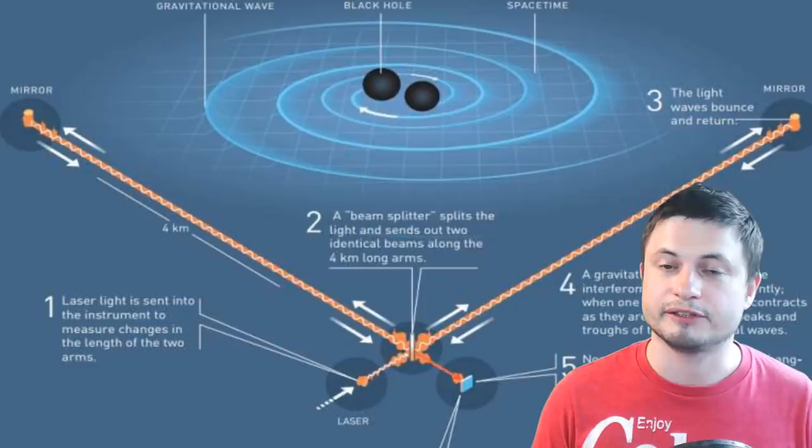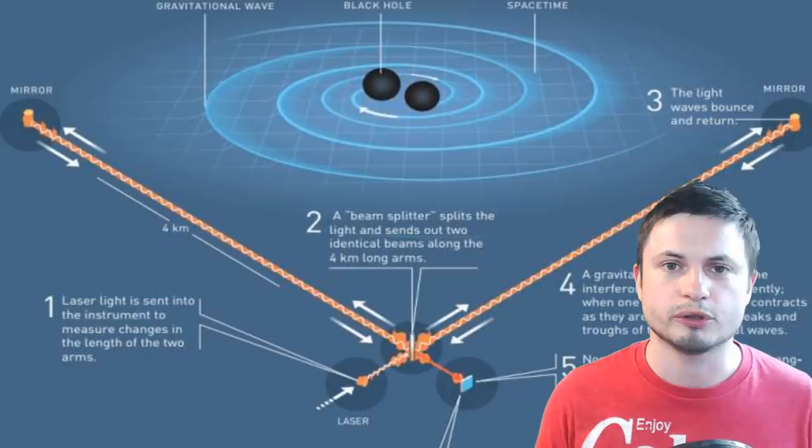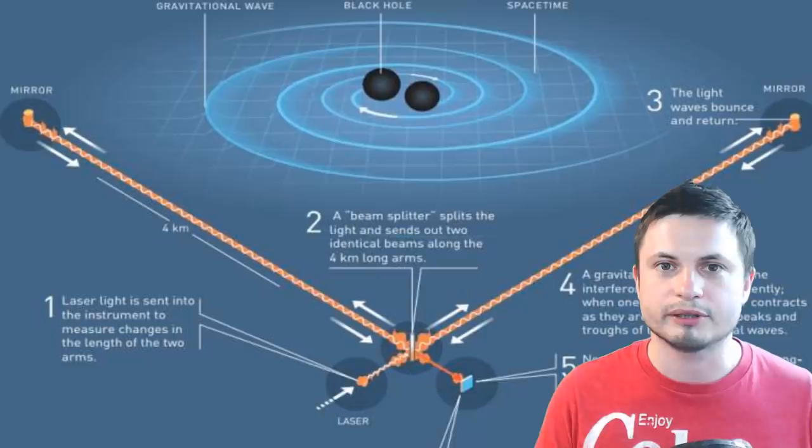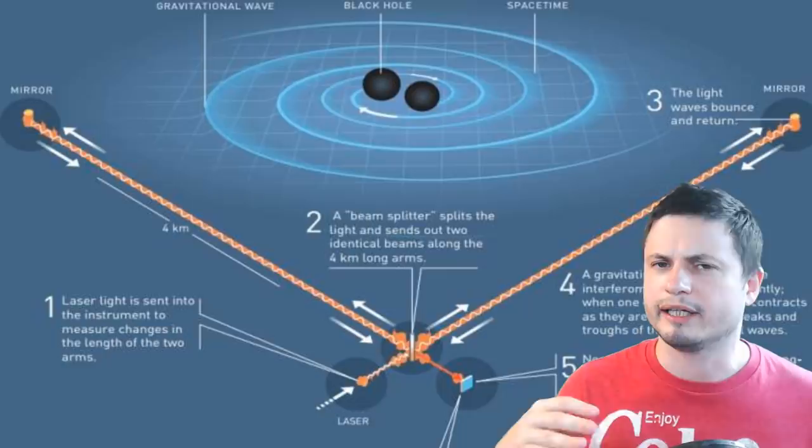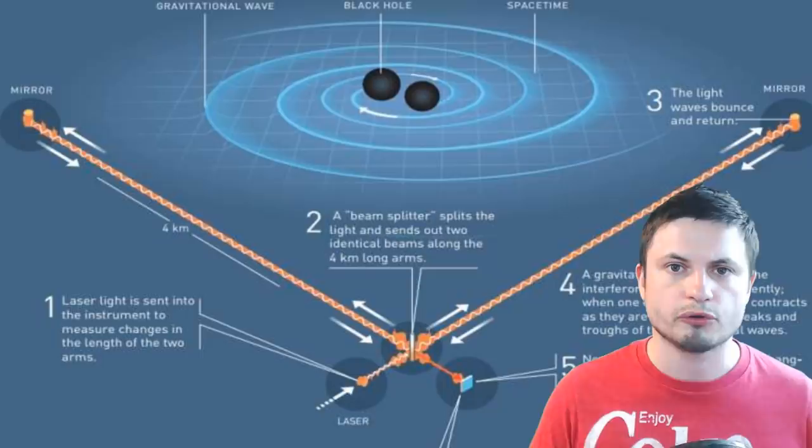LIGO detector in itself is a tremendously complex and mind-blowing machine. Veritasium a few years ago went to LIGO detector and made a really cool video about it. My main point here is that just creating this machine was already a huge process that involved a lot of things, but now we're able to detect these waves and we've confirmed their existence, what's next?